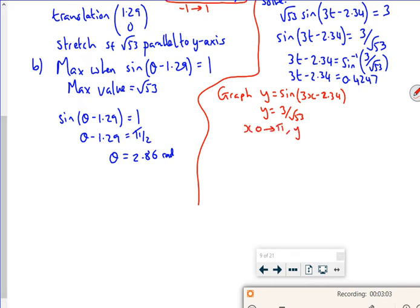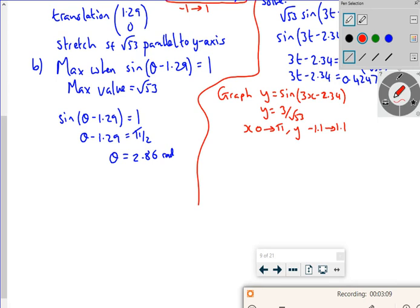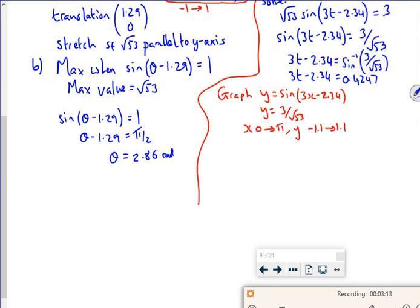My y value from minus 1.1 to 1.1. And if I put that in, and look where it crosses, hopefully what I'll get out is t is 0.922, 1.69 or 3.92 radians. Please don't just copy this.